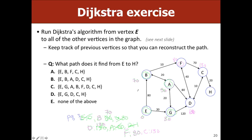A student asks: would it be correct to say the priority queue always holds the least cost we know of at that time? Yes, exactly. All costs in the priority queue are accurate for paths using only previously visited vertices.